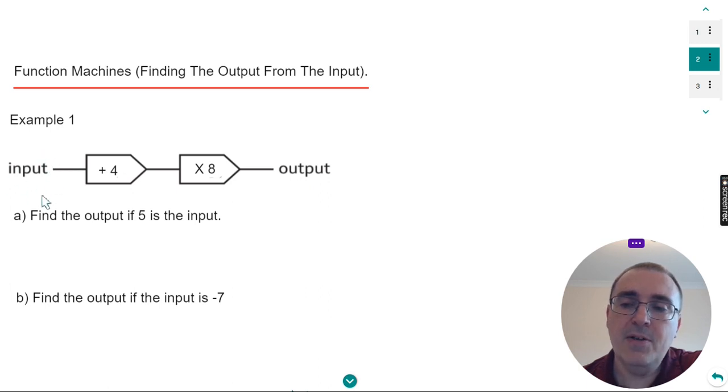Let's have a look at our first example. We have a two operation function machine. The first thing we're doing is adding on four and the second operation is to multiply by eight.